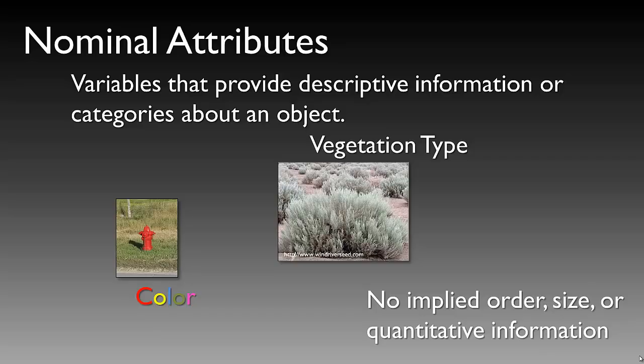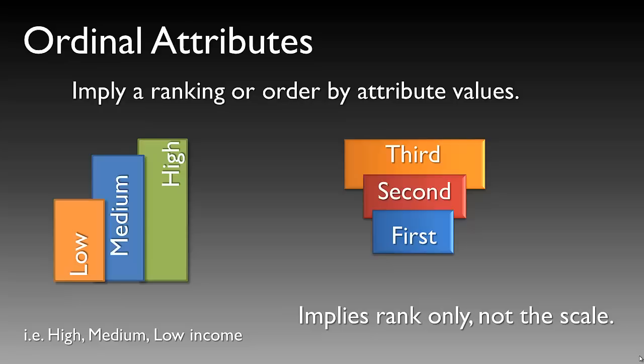Ordinal attributes imply some ranking or order by attribute values. For example, we could say low, medium, or high income. Also, first, second, third implies some ordinal ranking. Remember that ordinal attributes imply rank only, but no scale.